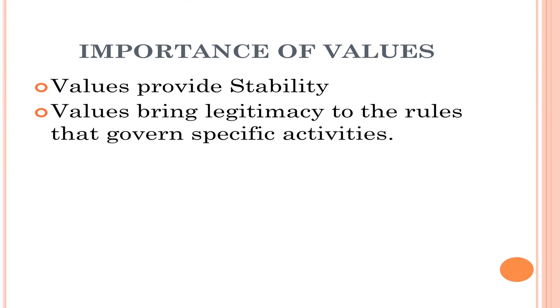Like norms, the importance of a value system is the same — it provides stability. If there is no value system, you are born as a member of society and do not know what you are supposed to do. You will have your own values, and another person will also have their own values, and that might cause a clash. Broader values provide stability and cohesiveness, as we discussed with norms. But norms are the subset of the value system — values give birth to norms, and they almost perform the same function.